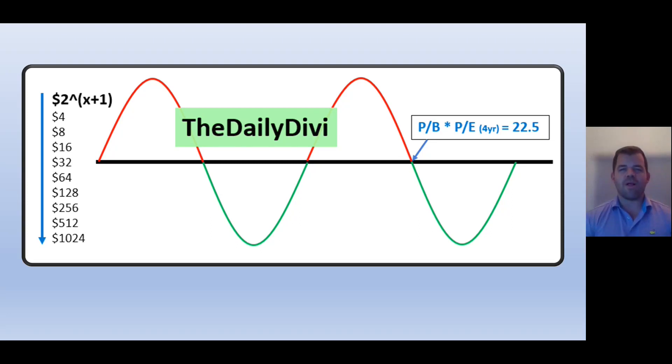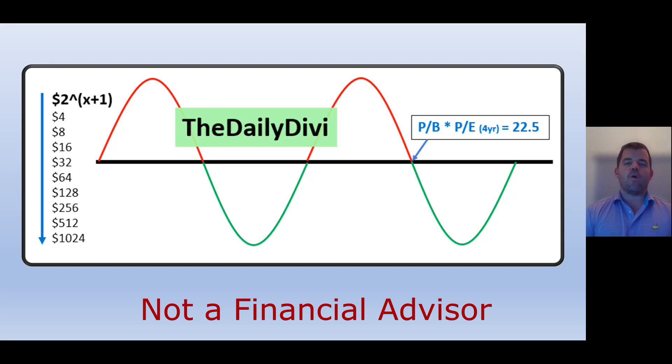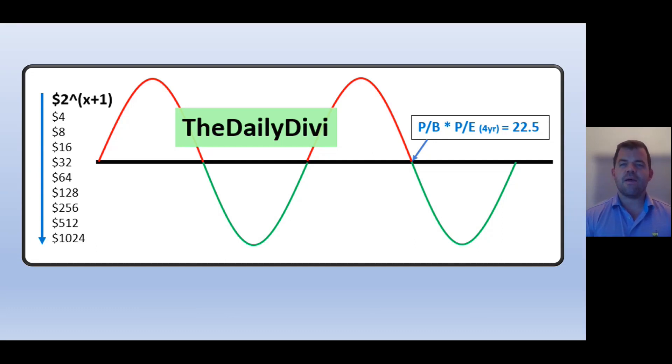Today, we'll be reviewing a formula I believe can provide confidence or at least peace of mind when investing in securities, which is stocks and bonds, particularly stocks. The formula is price to book times price to earnings using a four-year average that equals or is less than 22.5. I believe you have what's called a margin of safety present in that security.